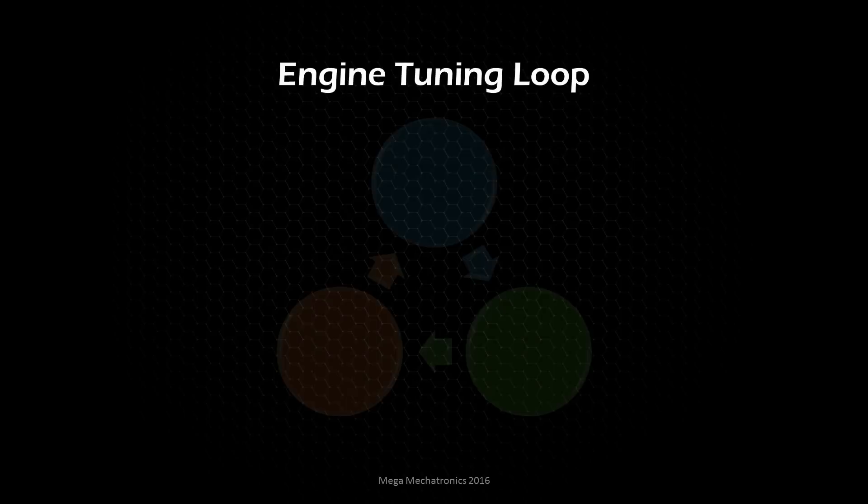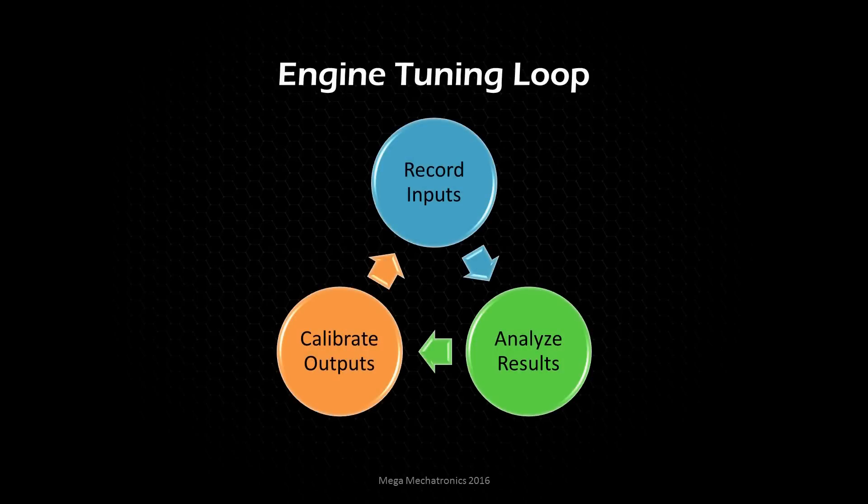The engine tuning loop is a cycle that you're going to complete 10, 20, 100, 500 times until your engine is calibrated. You're going to be recording inputs, analyzing those results, and then calibrating the outputs. Hopefully that will move your inputs toward your goal the next time around, and you can see you'll continually be going through this cycle.